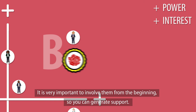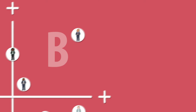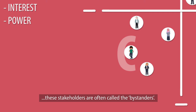Quadrant C has low interest and little influence. These stakeholders are often called the bystanders. You should monitor these stakeholders but they need little of your time.